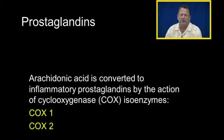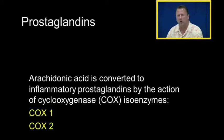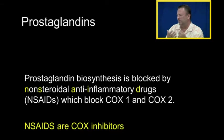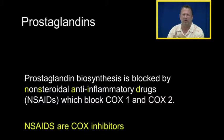All prostaglandins pass through the arachidonic acid step. Arachidonic acid is converted into inflammatory prostaglandins by the enzyme cyclooxygenase, which has various forms — COX-1 and COX-2. Prostaglandin synthesis is blocked by non-steroidal anti-inflammatory drugs; NSAIDs are COX inhibitors.